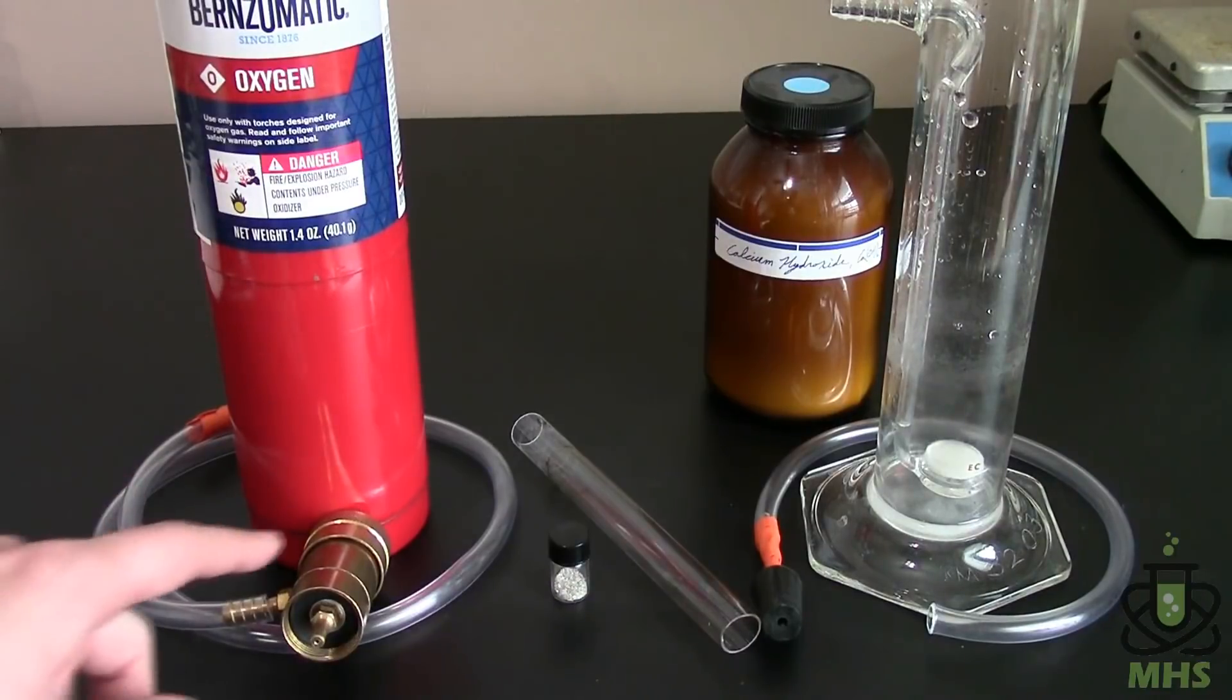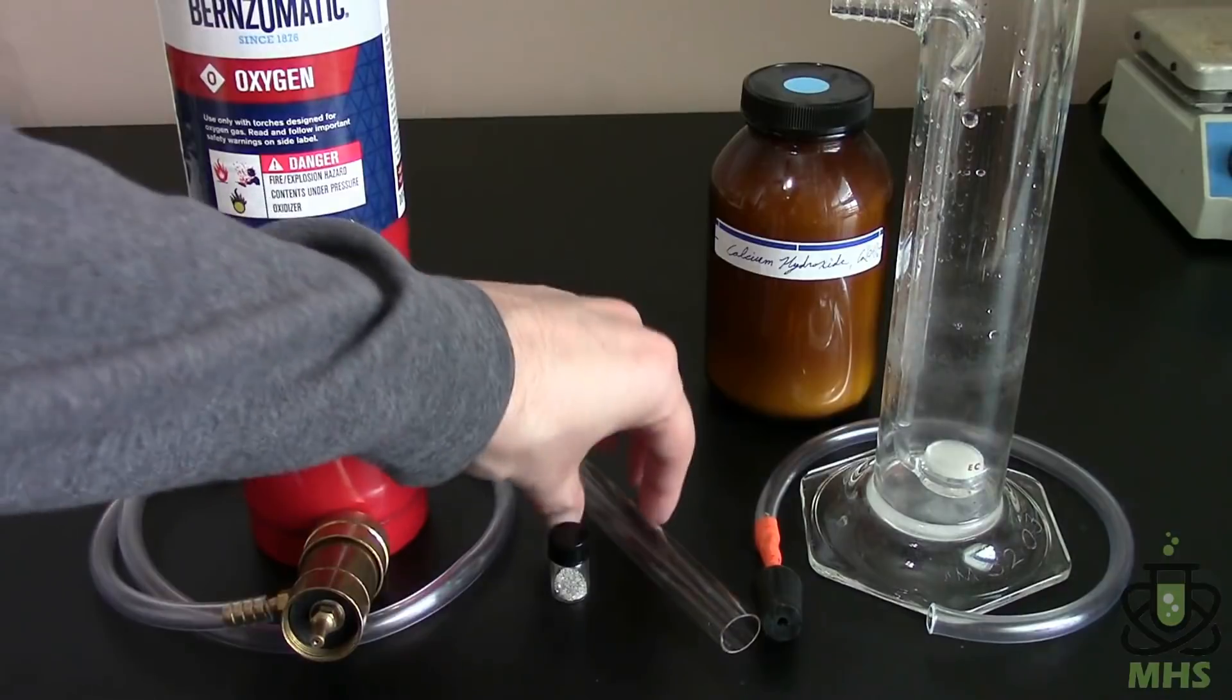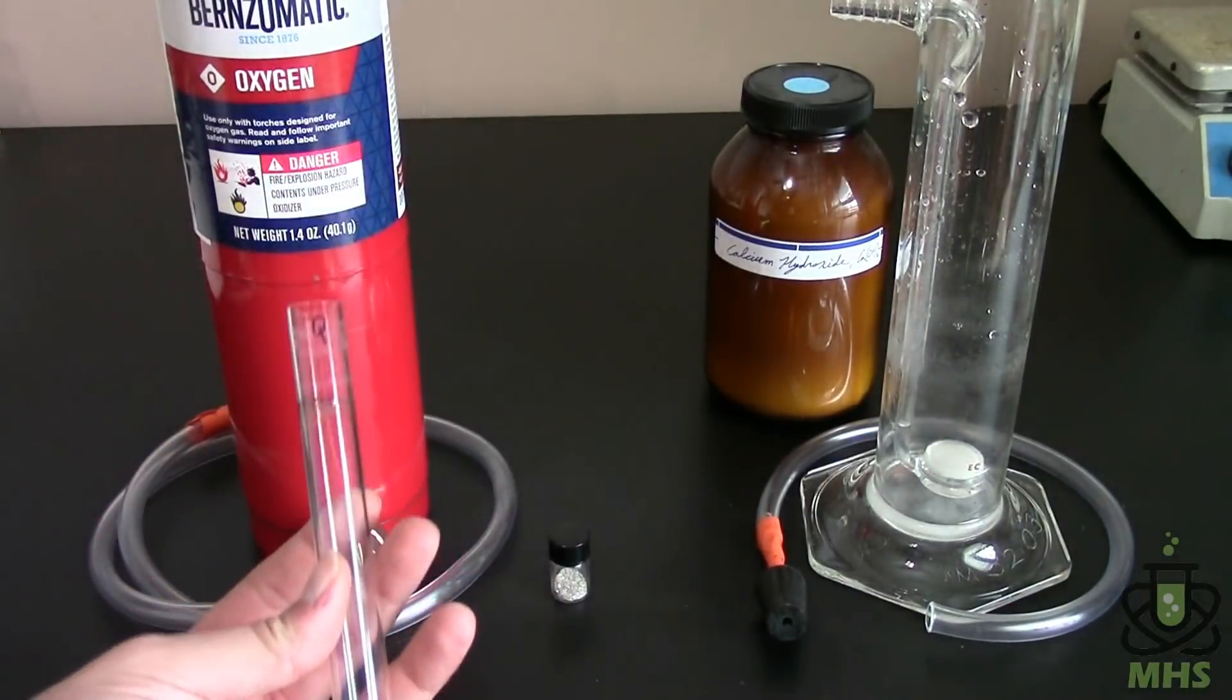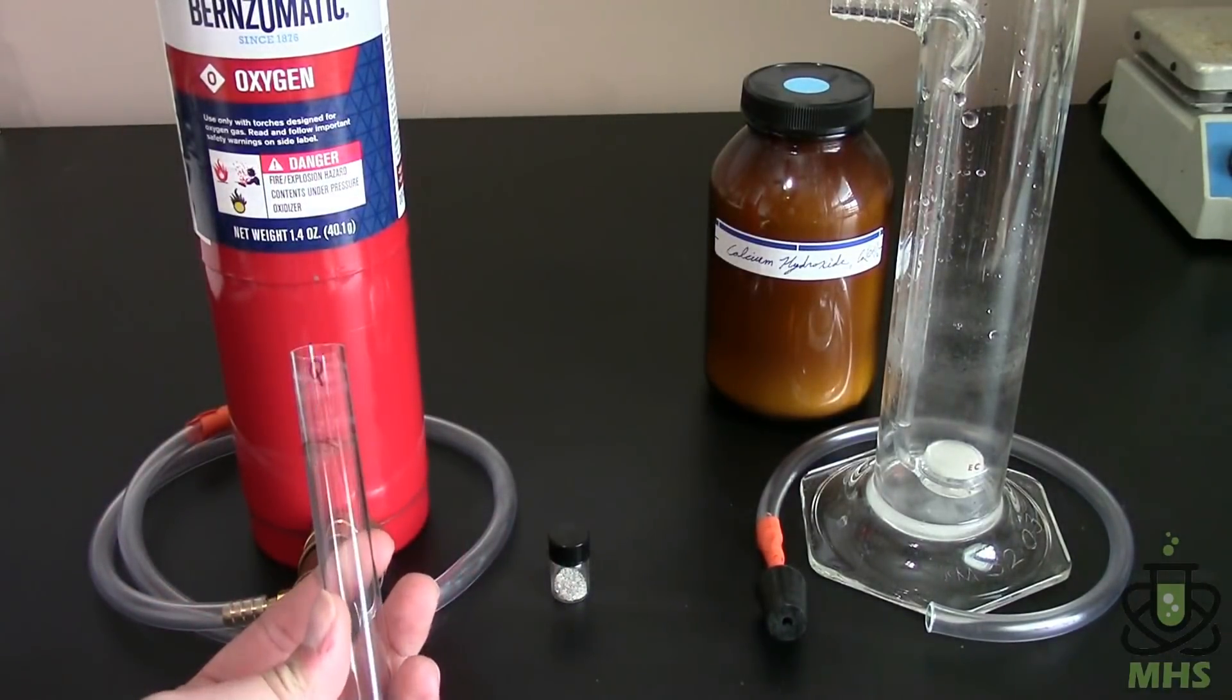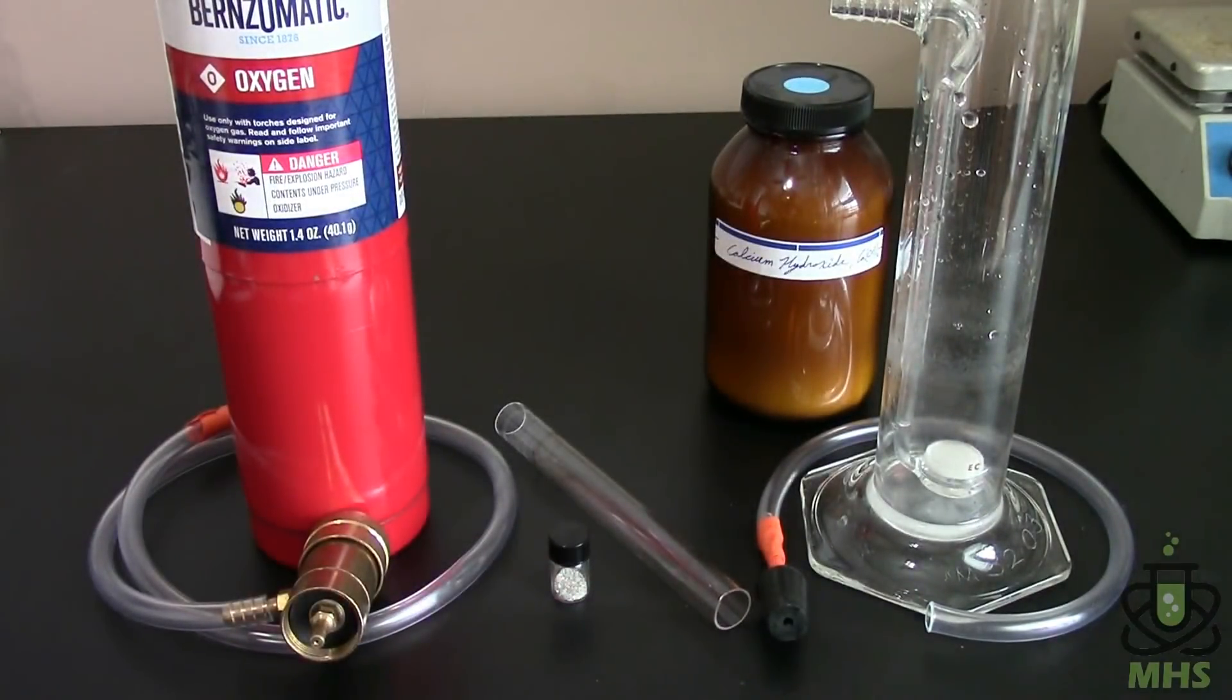So the oxygen is going to flow from the cylinder, come out of the regulator and go through this vinyl tubing which connects to the next piece which is a quartz glass tube. You see I wrote a Q on there for quartz and this is a special piece that you actually do need.